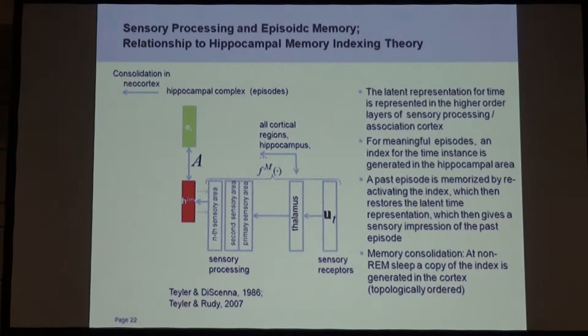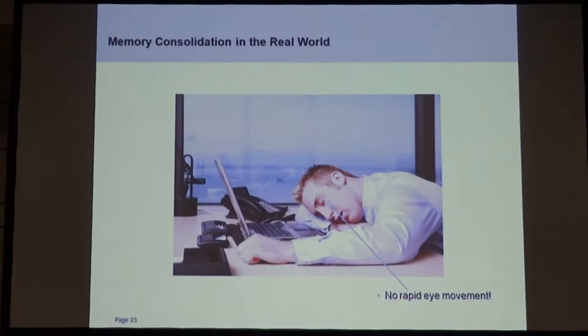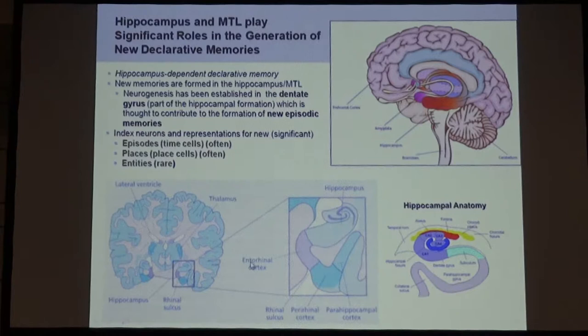Supposedly there's a consolidation process where memory moves from the hippocampus to the neocortex. In our model that would be a retraining — you reactivate the pattern and it gets copied into the neocortex. This transfer supposedly happens during sleep, during non-REM sleep. So the person who appears to be sleeping might be doing something very important — but only if his eyes are not moving. Have a good sleep — that's very important.